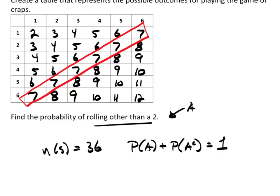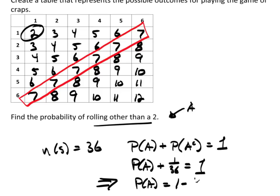So the probability of A plus the probability of A complement has to be equal to 1. So probability of rolling other than a 2, which is probability of A, plus the probability of A complement, which would be rolling a 2, has to equal 1. Well, I can find the complement easier. There's only one way to do it. So the probability of A plus the complement is 1 out of 36 must be equal to 1. That would then imply that the probability of A, rolling other than a 2, equals 1 minus 1 over 36, which is 35 over 36.